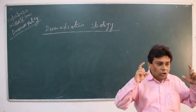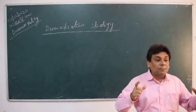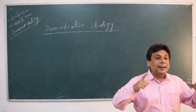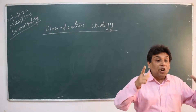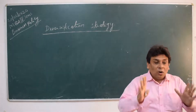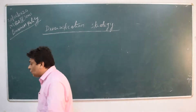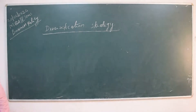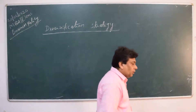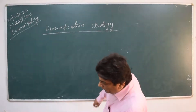In Ansoff terminology, concentric diversification and conglomerate diversification are the two terms for related diversification and unrelated diversification respectively. So these are the two different types of diversification. Now let us understand the different types of concentric diversification.